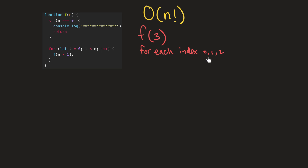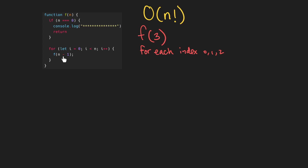The reason we're only doing indices zero, one, two is because i starts off as zero, and we're going to iterate through our input value n up until i is no longer less than n. So once i becomes equal to n, we stop. If i were to be three, we wouldn't go through the loop again — that's why it's zero, one, two. And for each of these iterations, we're going to call this function again.